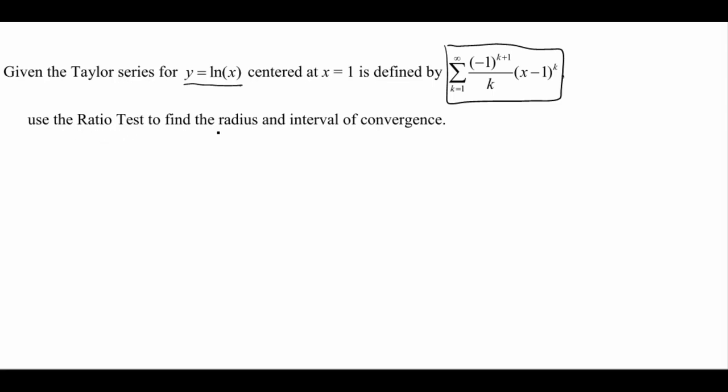Now, I want you to use the ratio test to find the radius and the interval of convergence. The radius is gonna tell us how far away we can go from that center point of x equals 1 and still have our approximation be good. Then with the interval, we're gonna test our endpoints and see, does it converge at our endpoints or not? So let's start with our ratio test.